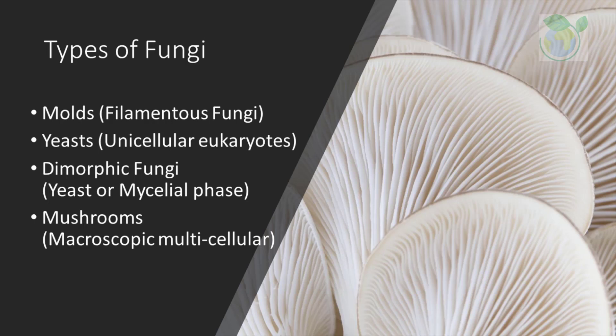Let's take a look at the three categories in detail. Molds, or filamentous fungi, reproduce by means of spores produced by asexual cell division or as a result of sexual reproduction. Next, we have yeasts, which are predominantly unicellular eukaryotes. An example is baker's yeast which is used to make bread. Most yeasts reproduce by an asexual process called budding, in which the cell develops a protuberance which enlarges and eventually separates from the parent cell.